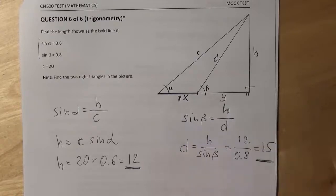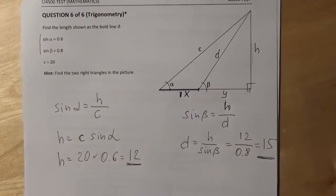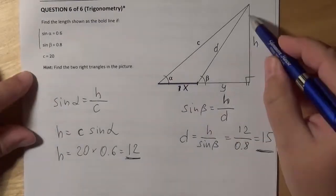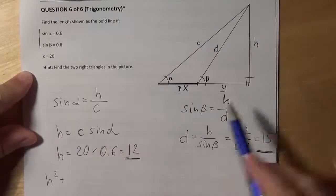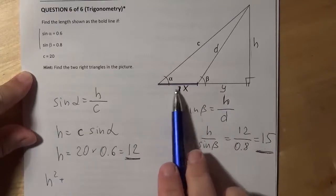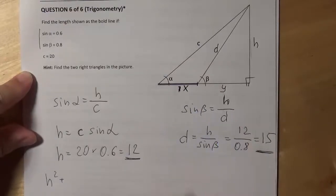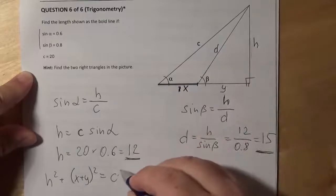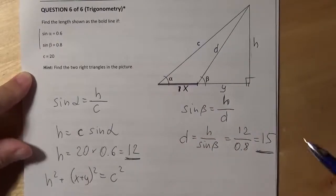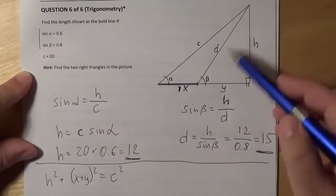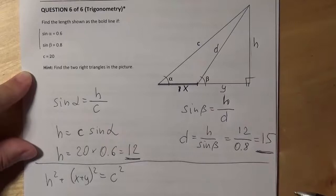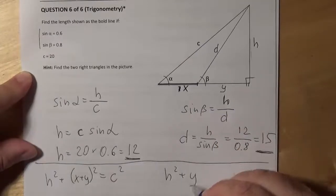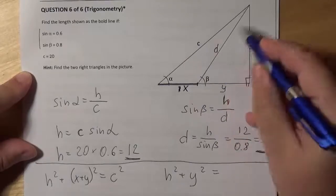Applying the theorem of Pythagoras for the bigger triangle, I can say that one of the edges, H squared, plus second of the edges, it's in our case it's X plus Y, so plus X plus Y squared, equals hypotenuse, which is C squared. And for the smaller triangle, I can also do something like this. H squared, again, one of the edges, plus Y squared, equals D squared.